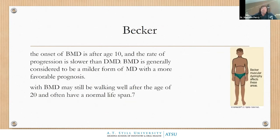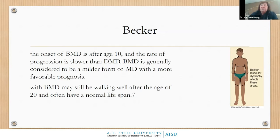Becker muscular dystrophy has a later onset, around age 10, and the progression is much, much slower. These folks usually will have a normal lifespan and will be walking well into their twenties. It's a much milder form with a better prognosis.